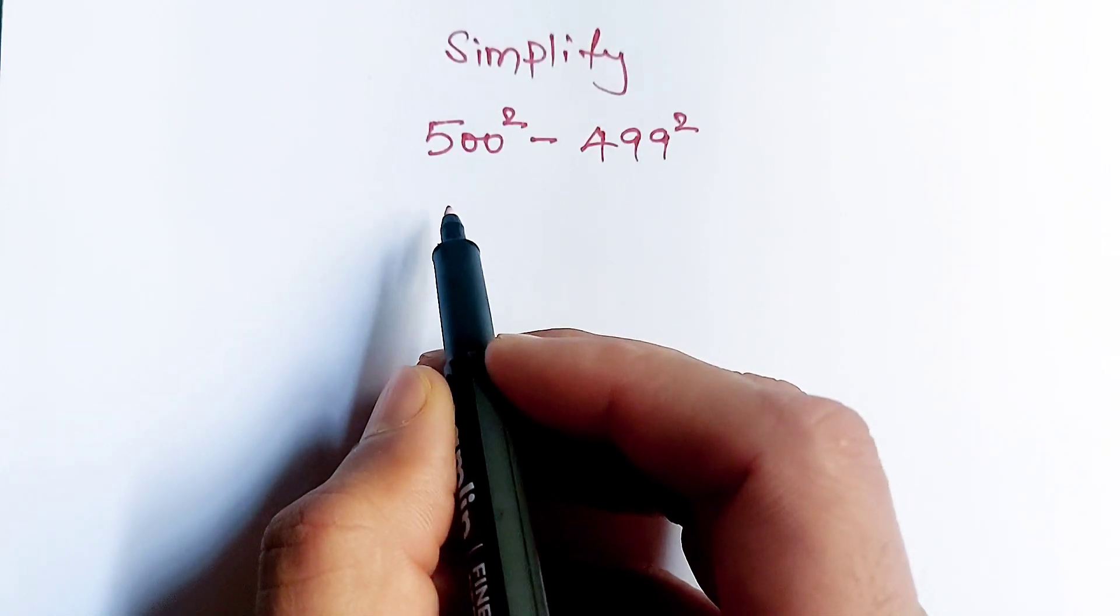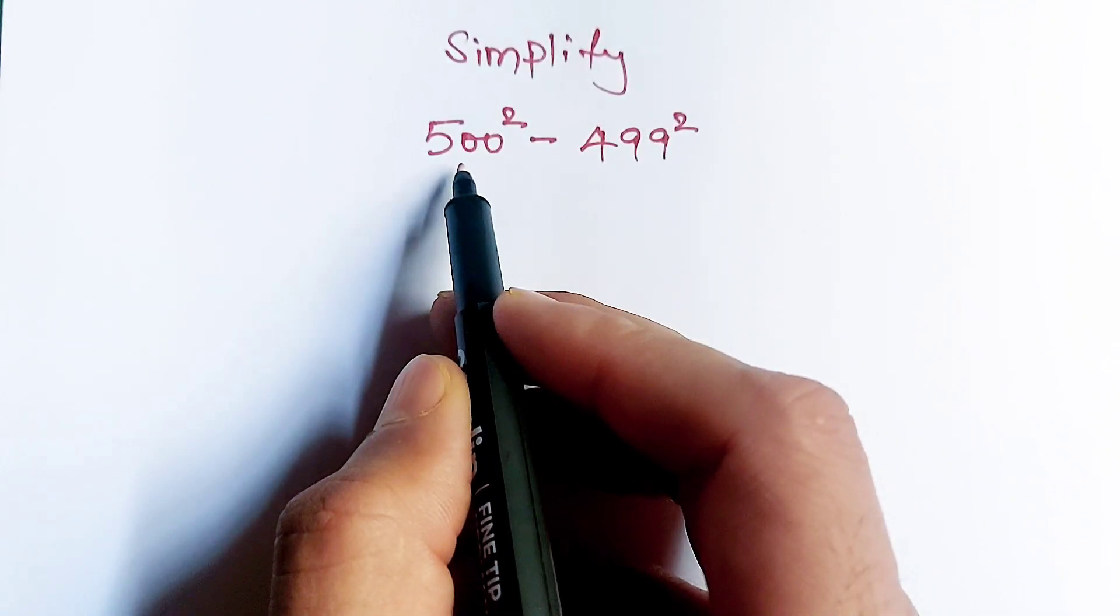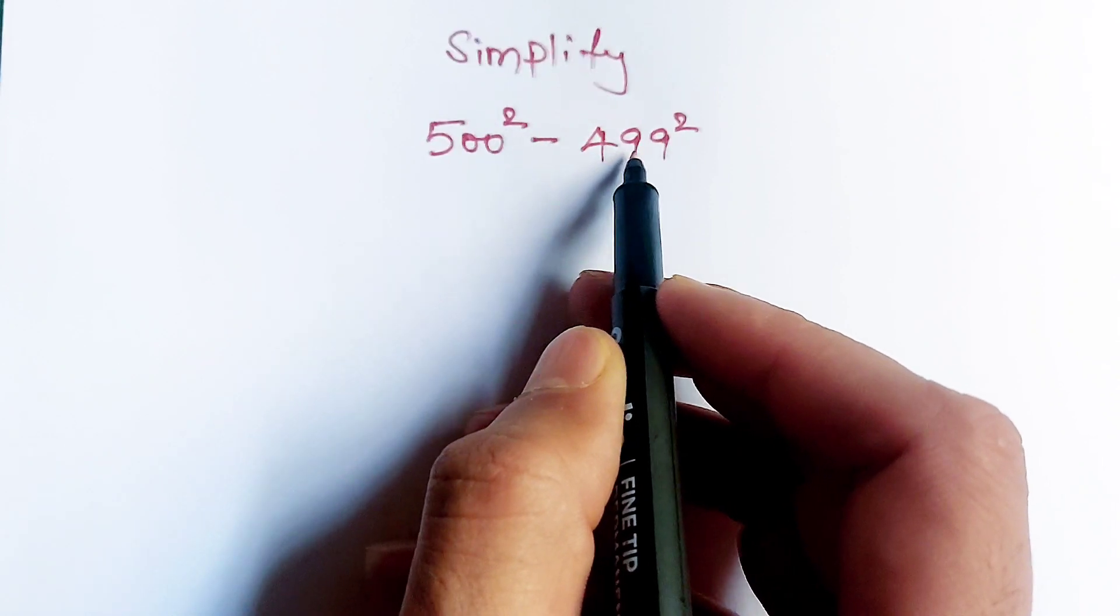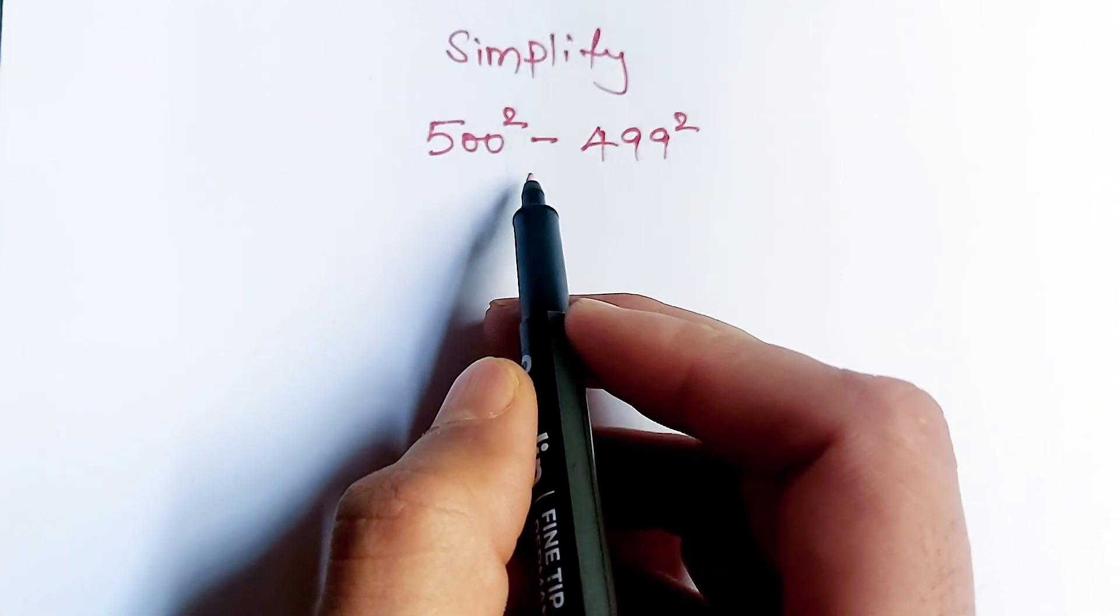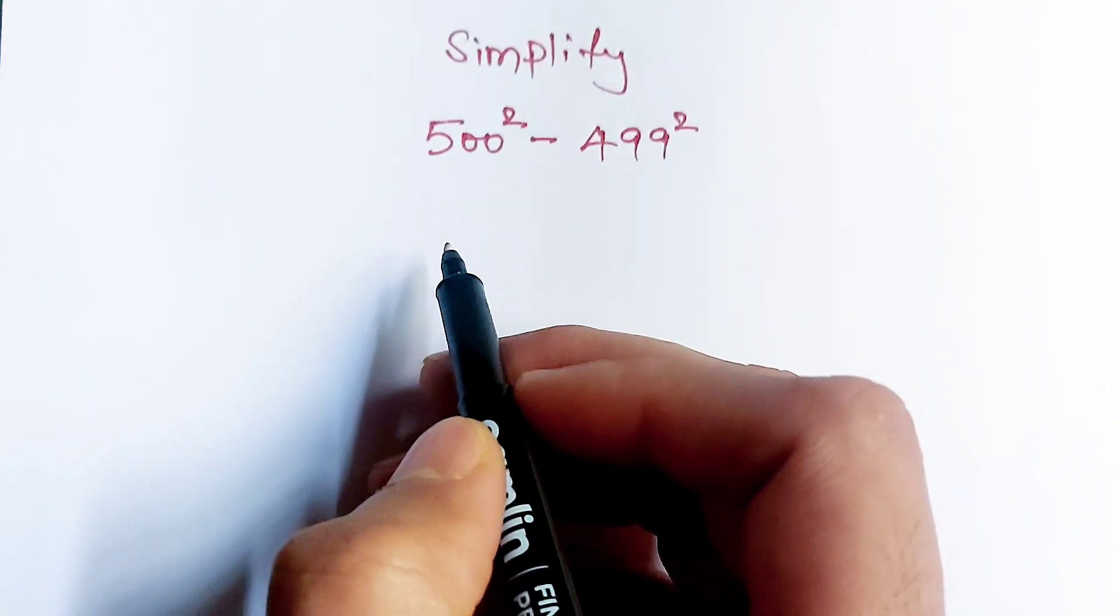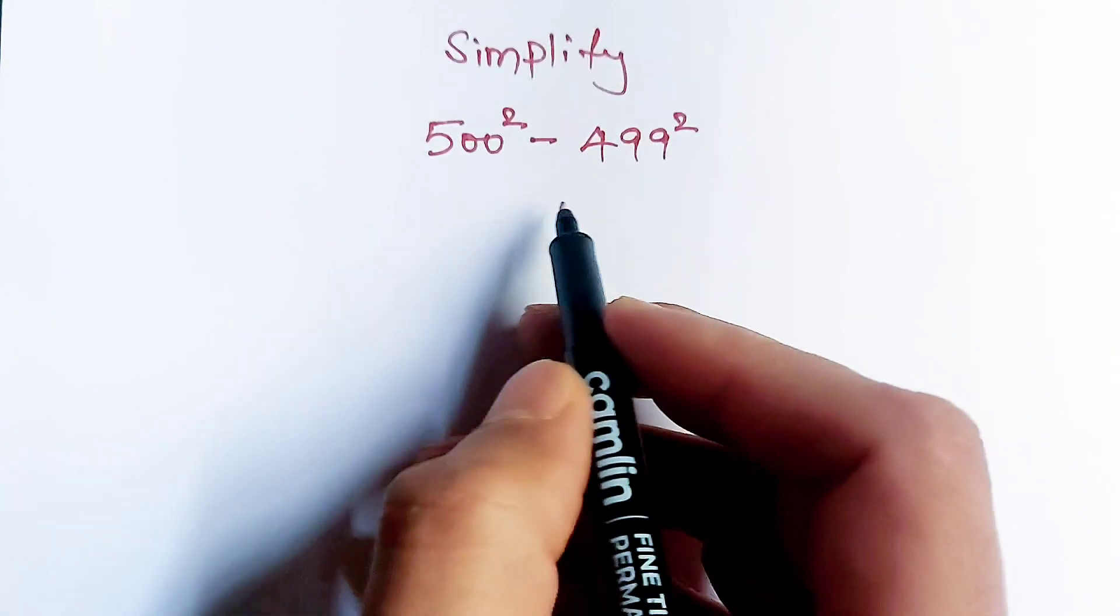Hello dosto, question is 500 square minus 499 square. We have to simplify this question. Let's find out how we will do it.